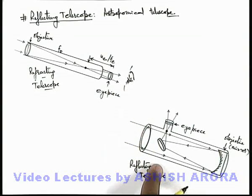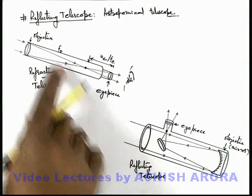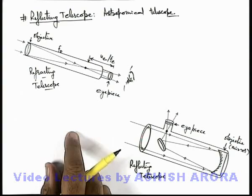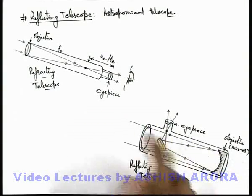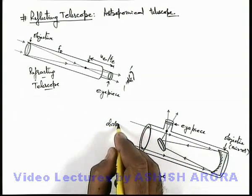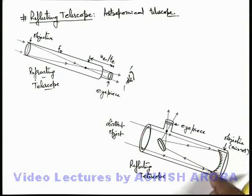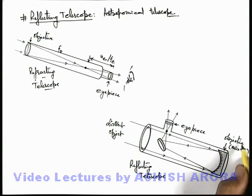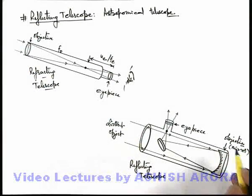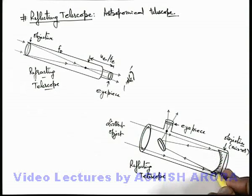Here you can see this is the internal structure of a reflecting type telescope, in which the direct light rays which are coming from distant object are allowed to incident on a concave mirror, which is considered as the objective, or the objective lens is replaced by a converging mirror.